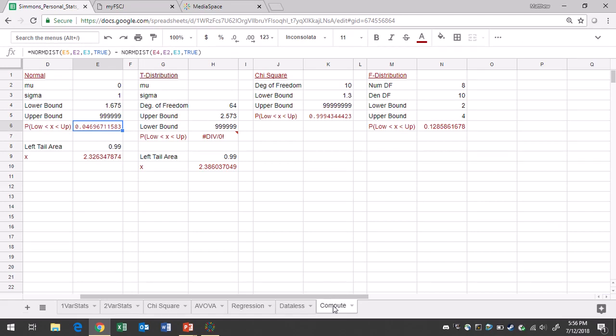In Google Sheets, make sure you're in the Compute tab and go to the normal area. Zero is mu, sigma is 1. Since I'm looking for a data value, I need left-tailed area, which is 0.975. And look here: to two decimal places, we get a critical value of 1.96.